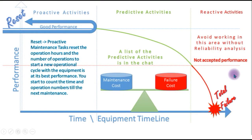We are going to speak today about the one curve that is going to tell you everything about the maintenance systems, the maintenance strategies, and the types of different activities you are doing in your maintenance — how they are related together and how they are related with the lifetime or the status of your equipment.